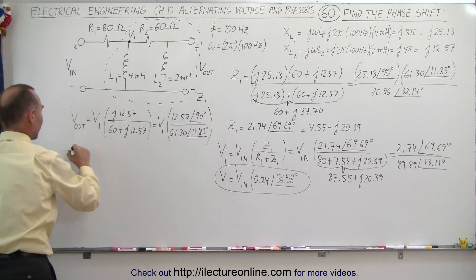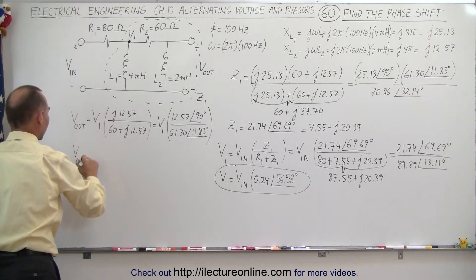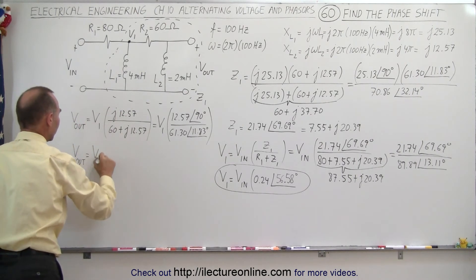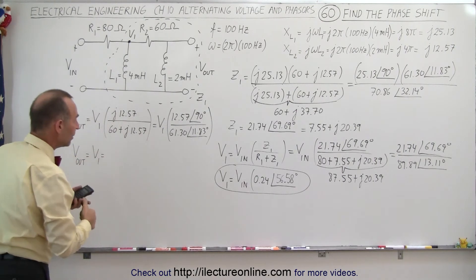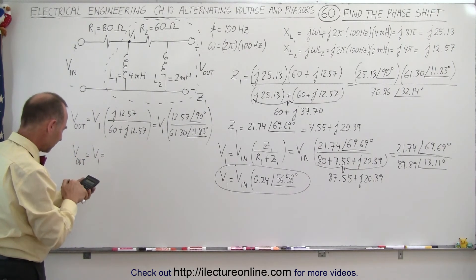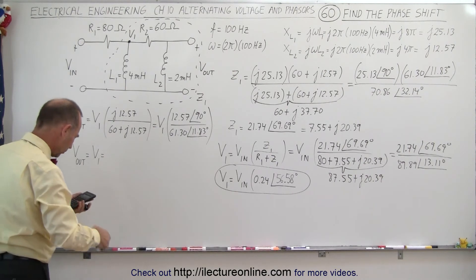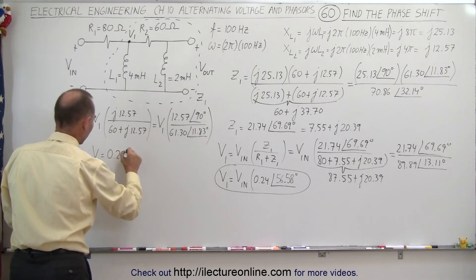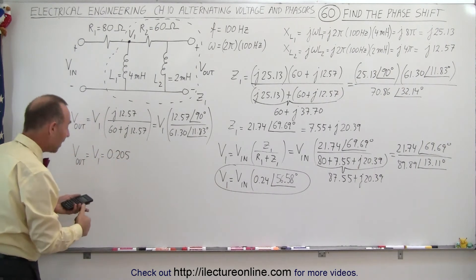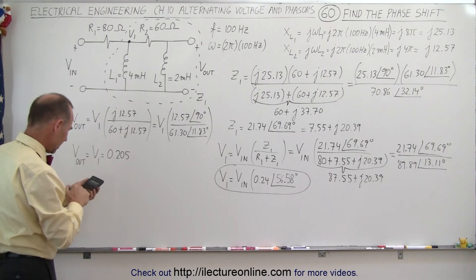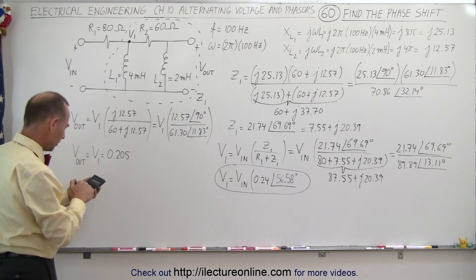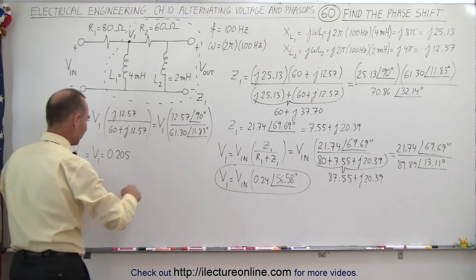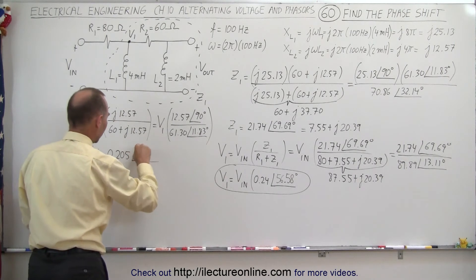So now we can go ahead and find V out as a function of V1. That will be 12.57 divided by 61.3, which is 0.205 — I'll write it as 0.205 to reduce rounding error — with an angle of 90 minus 11.83, which is 78.17 degrees.